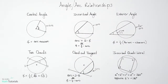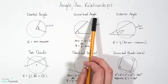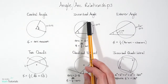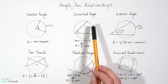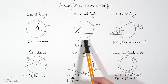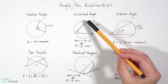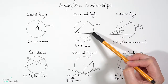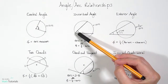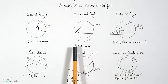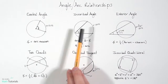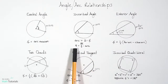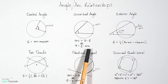The next angle-arc relationship is an inscribed angle. Notice this one cuts all the way across the circle but still stays within the circle. We can find the arc measure from here to here if we multiply the angle measure by 2: arc equals 2 times the angle. Or if you're given the arc and asked to find the angle, the angle equals one half times the arc measure.